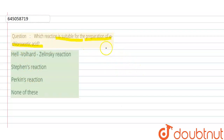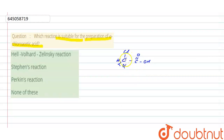First of all, let's look at alpha-chloroacetic acid. Its structure is: CH2 containing Cl, then C double bond O, then OH. This is called alpha-chloroacetic acid because the Cl is on the alpha carbon — the carbon adjacent to the carboxyl group.